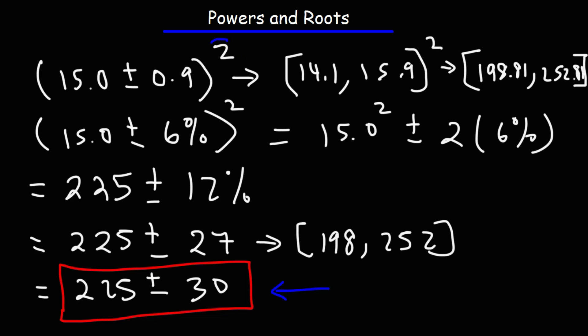So when you're dealing with powers, what you do, just to review, is we're going to square 15. But the percentage, we're not going to square it, we're going to multiply it by the power. But before you do that, you need to convert the uncertainty to a percent uncertainty, and then you can multiply by two.